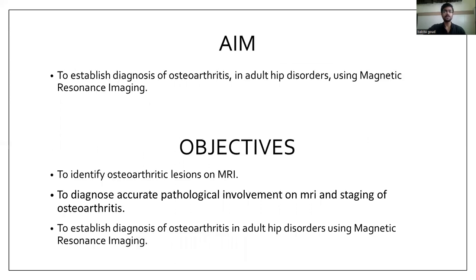Now we will see what is the aim of the study. The aim is to establish a diagnosis of osteoarthritis in adult hip disorders using magnetic resonance imaging. The objectives are: firstly, to identify osteoarthritis lesions on MRI; then to diagnose accurate pathological involvement on MRI and staging of osteoarthritis; and finally, to establish diagnosis of osteoarthritis in adult hip disorders using MRI.